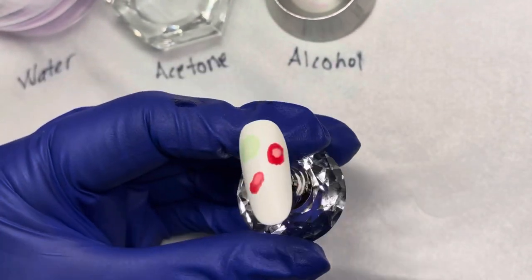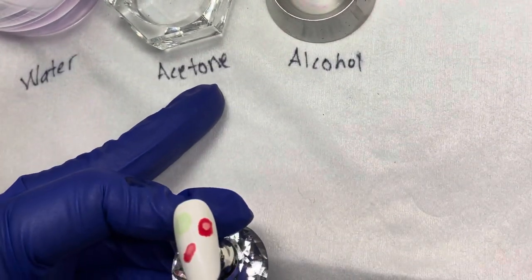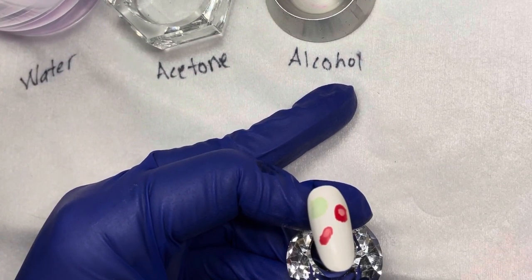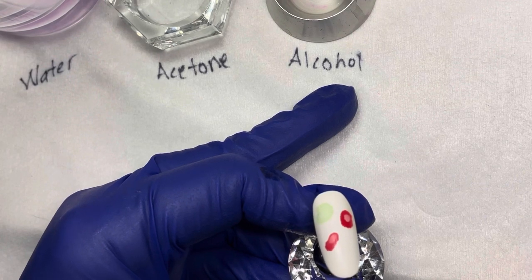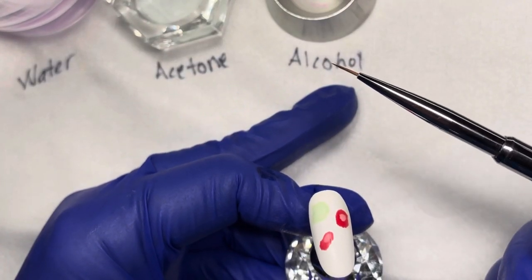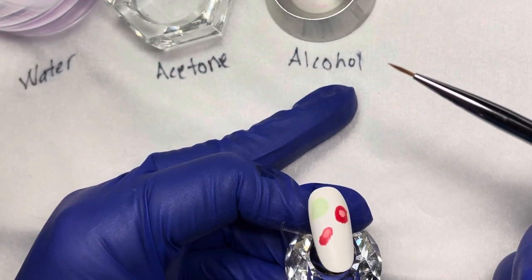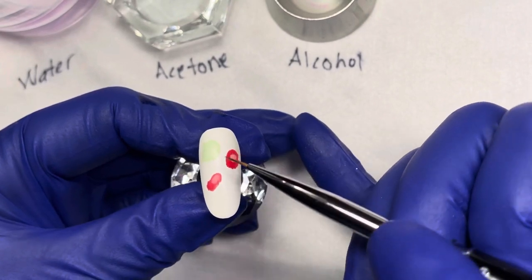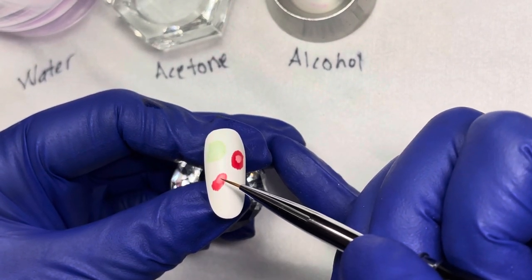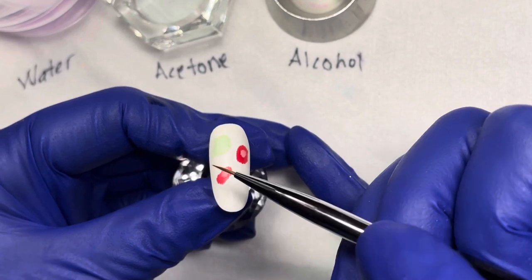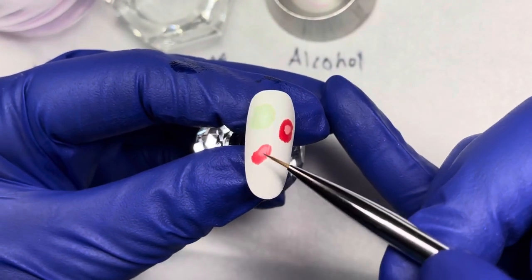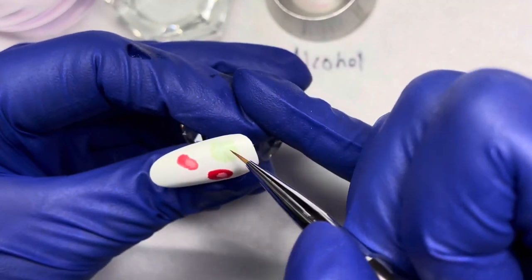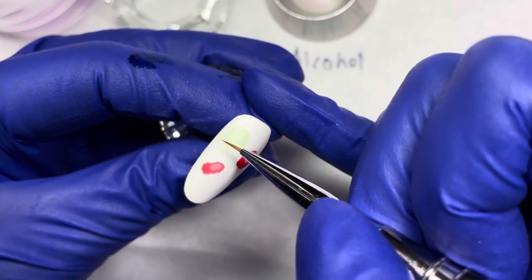With alcohol inks, depending on the manufacturer, you can either manipulate them with acetone or alcohol. It's going to depend on what the brand recommends that you use. Using a detail brush or some small brush that you like to work with with your alcohol inks, we're gonna manipulate the texture of them by playing with alcohol or acetone to get the shape that we want and to get that really thin, translucent-y petal look that some flowers have. So let's play with the leaf first because that is going to be the lightest color.